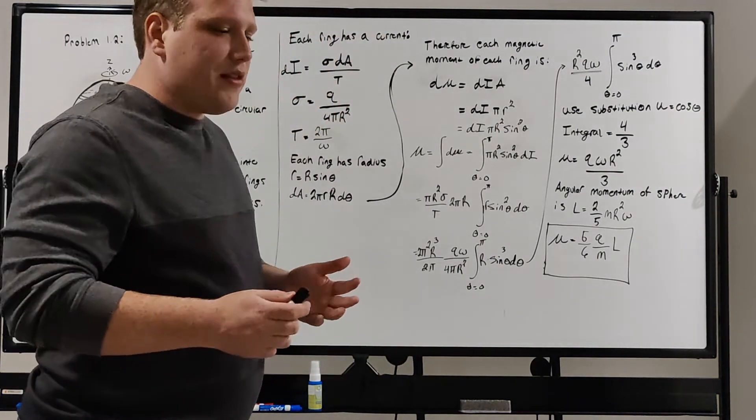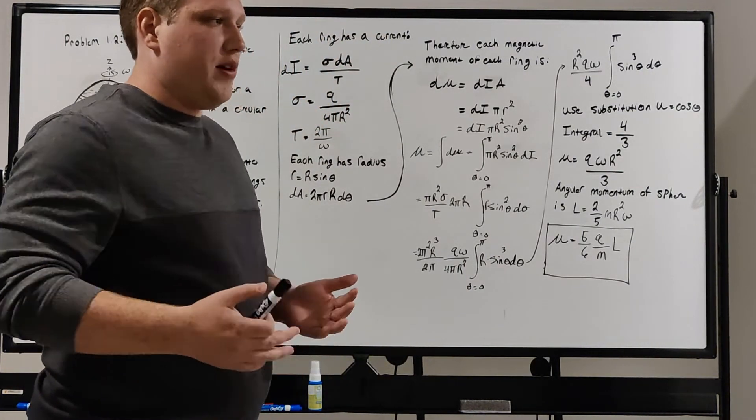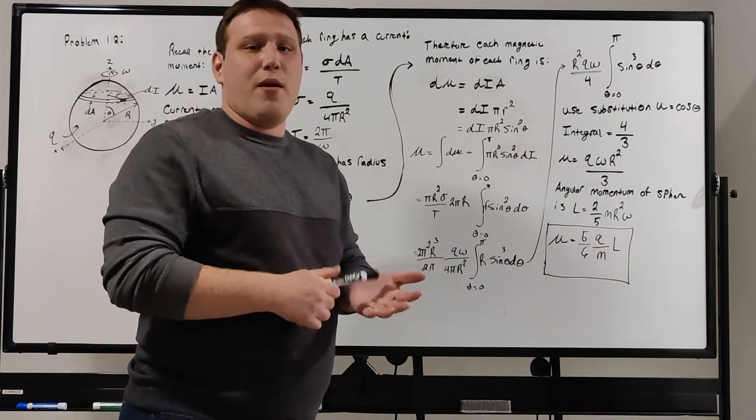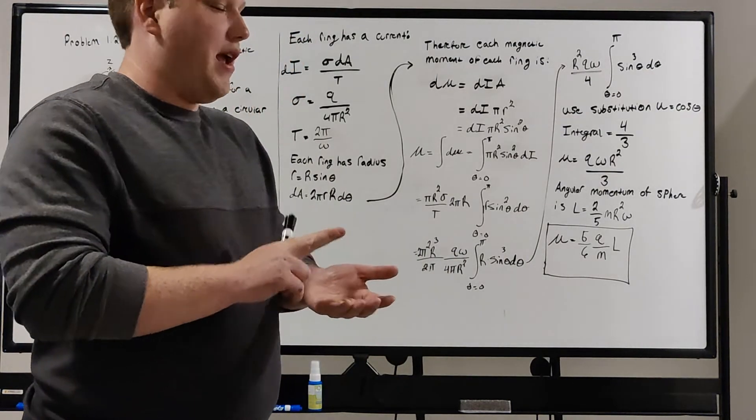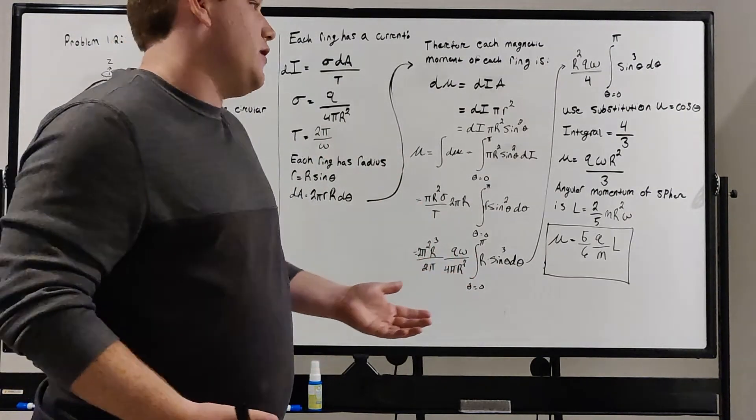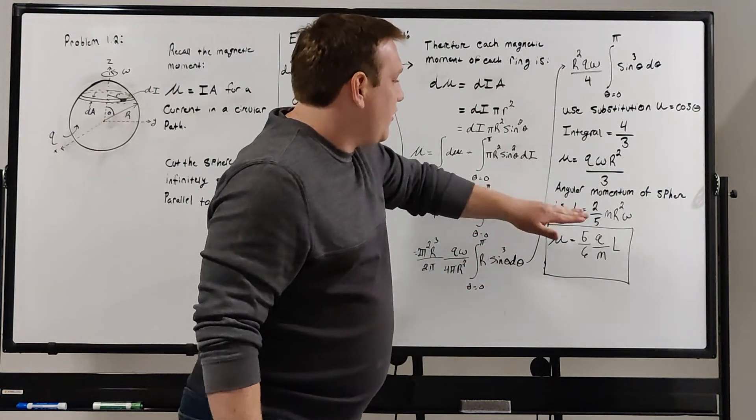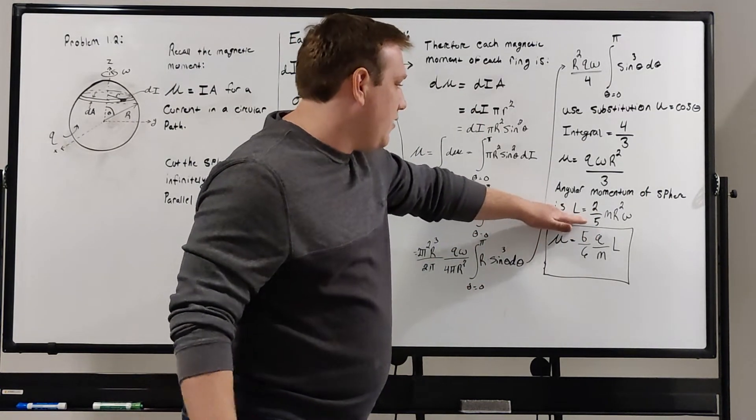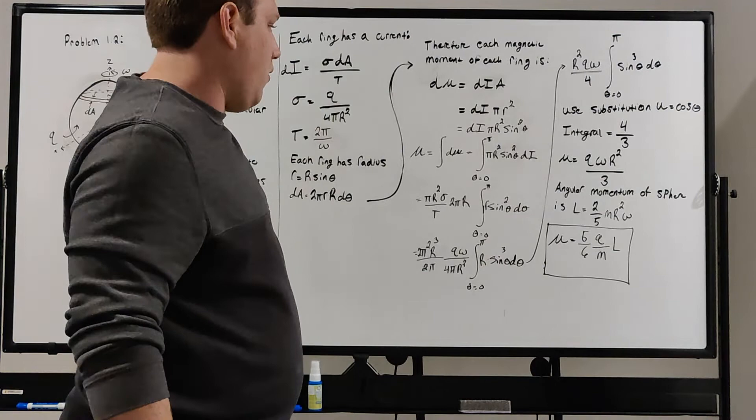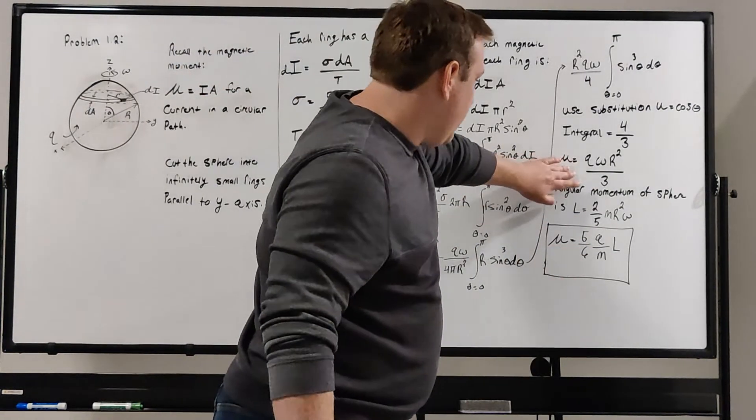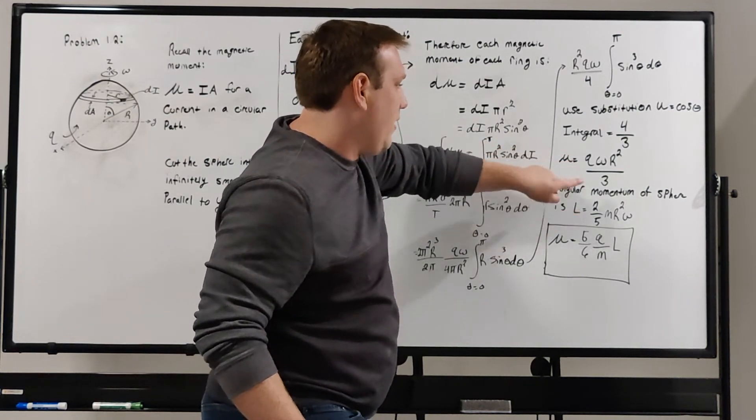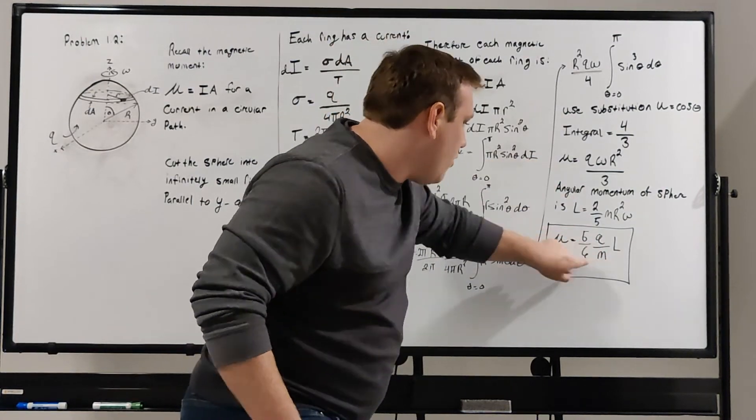The angular momentum of a sphere is pretty easy to look up in any textbook or online. It's a pretty basic physics problem because the angular momentum is just given by the moment of inertia times the angular velocity. You can look up the moment of inertia of a sphere or figure it out yourself. The angular momentum of a sphere is 2 fifths times the mass times the radius squared times the angular velocity. If you then do a comparison between our magnetic moment and the angular momentum here, you can see that this relation holds true.